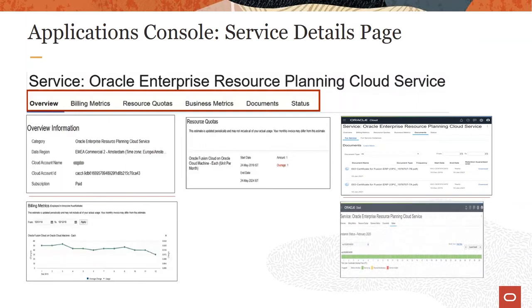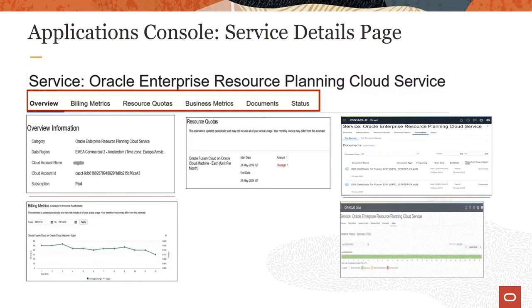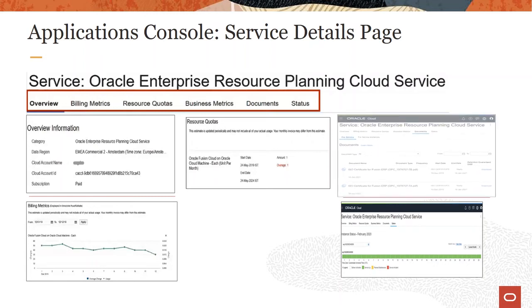After you click a cloud service in the Active Applications, you're directed to its overview section. This gives you details such as the data center region where your service is hosted, your cloud account name, service start and end dates, customer service identification details, specific service details such as instance name, who the admins are for different services, and the URL for those services. Other tabs show you billing metrics, resource quotas, and business metrics of your cloud services.